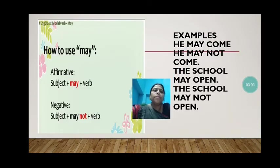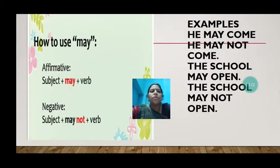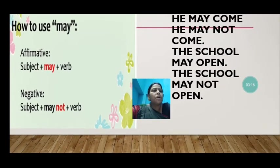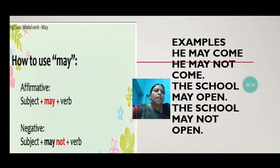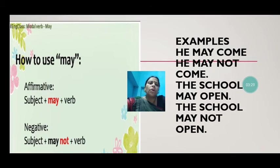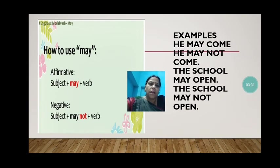Now, the use of 'may' — about how to change an affirmative or assertive sentence into negative. The structure is: subject plus 'may' plus verb becomes subject plus 'may not' plus verb. For example, 'He may come' becomes 'He may not come.' 'The school may open' becomes 'The school may not open.' So only 'not' has been added with 'may' and the sentence has changed into negative.